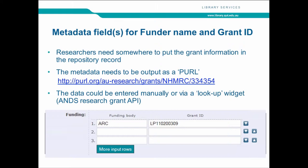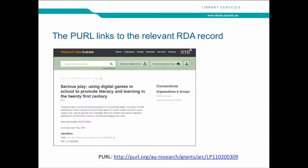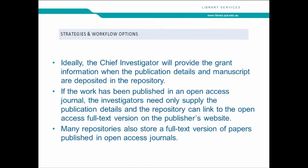The PURL actually links to the Research Data Australia activity record for the grant. ANDS have very helpfully created pages for all ARC and NHMRC grants, so when we create the PURL it will resolve to that page, giving people much more information about the grant, meaning we don't have to store that information in our repositories. Ideally the chief investigator will provide this information when publication details are deposited. If published in an open access journal, they only need to supply the publication details, though many repositories also store an open access copy as a backup.